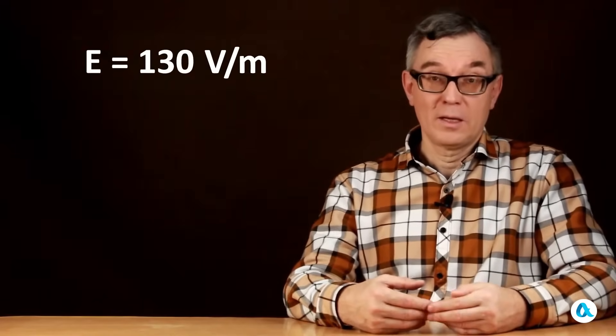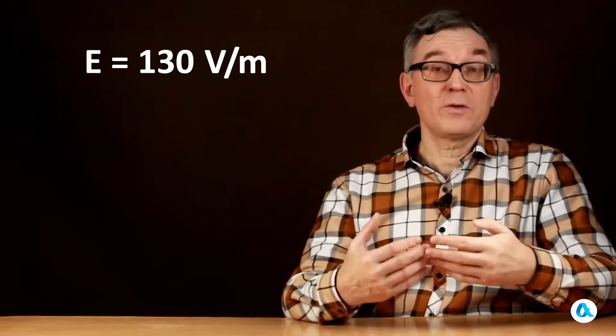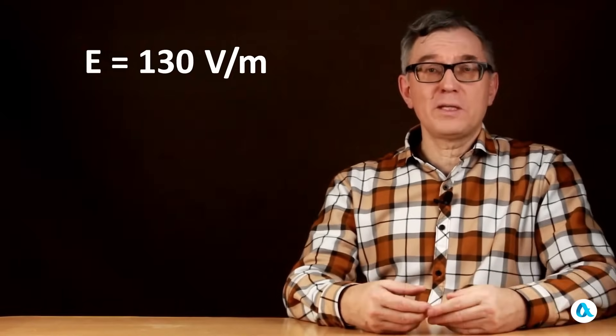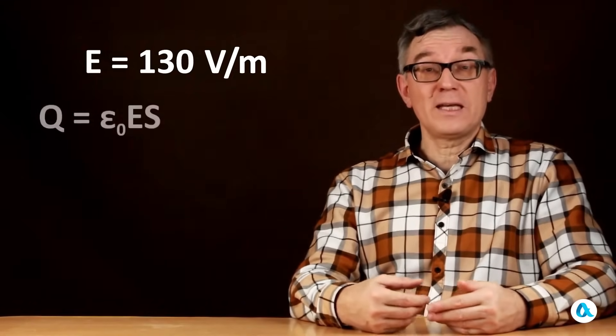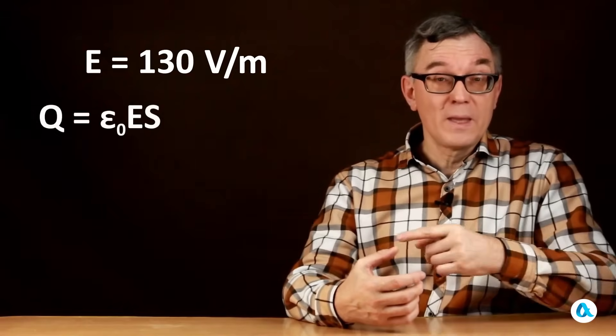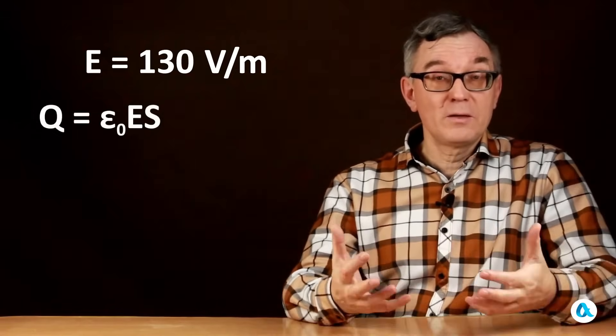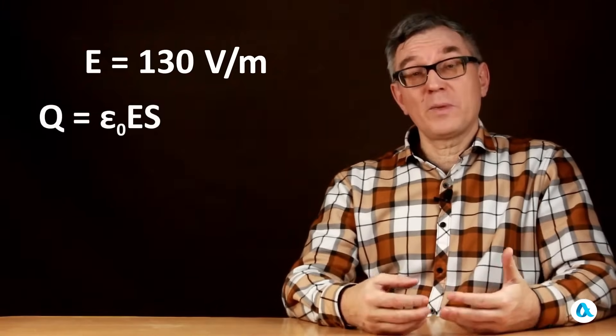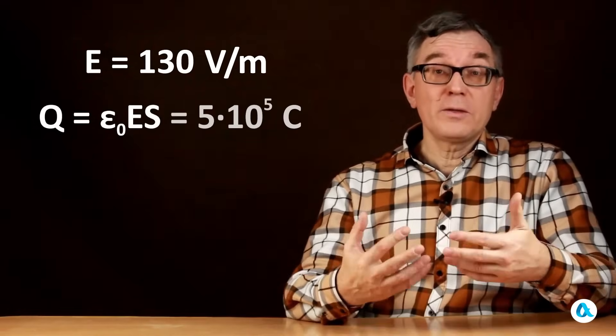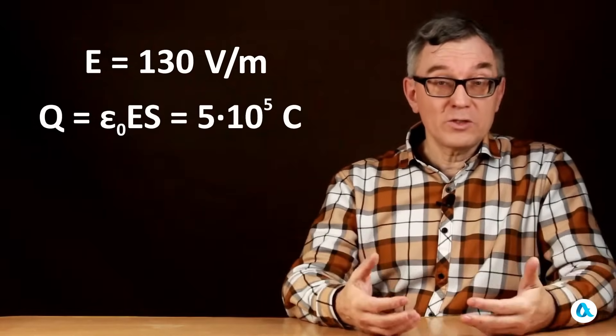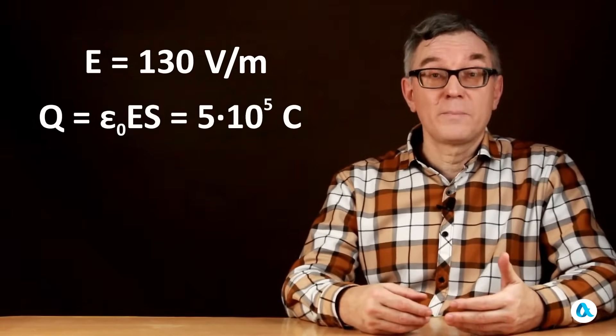I'll start by saying that knowing the electric field near the Earth's surface is 130 volts per meter, I will find the charge of the Earth. To do this, we need to multiply the surface charge density ε₀E by the surface area of the Earth. And when we plug in all the numbers, we get that the Earth has a negative charge of 500,000 coulombs.